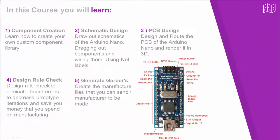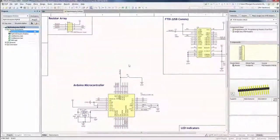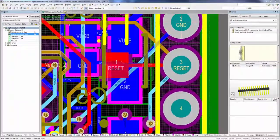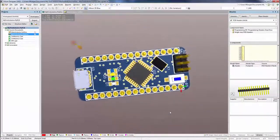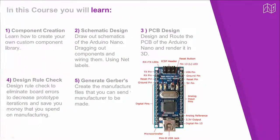So let's go through what I'm going to be teaching in this course. First of all, I'm going to show you how to get used to the tools in Altium. I'll show you how to learn and create your own custom component library, draw out the schematics of the Arduino Nano, design and route the PCBs of the Arduino Nano and render it in 3D, and create the manufacture files that you can send to your manufacturer — but that's only after you do your design rule check.